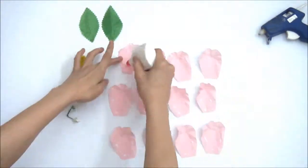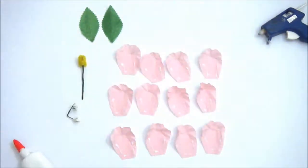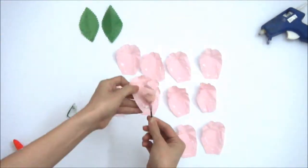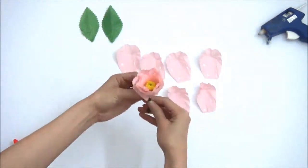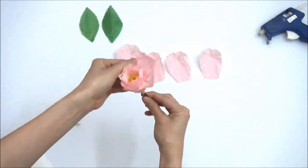We have 12 peony petals and here I'm just putting the glue. You take the core and you want to put the petals in a random order.